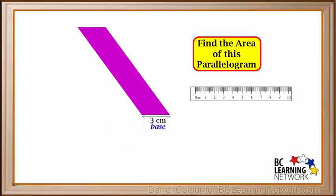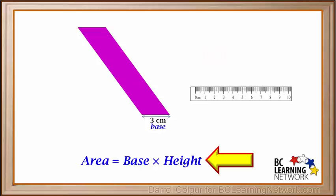Here's another example. We're given this purple parallelogram and we're told that the base is 3 cm. We're asked to find the area of this parallelogram. We're also given a ruler. We know that the area of a parallelogram is its base times its height. The base is 3 cm, but how do we find the height of a parallelogram that is leaning like this?